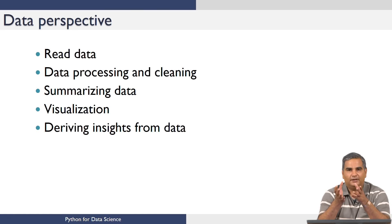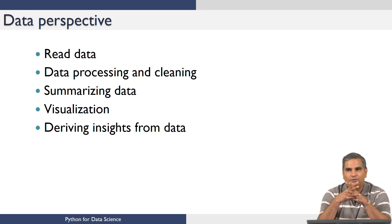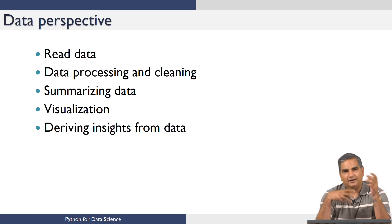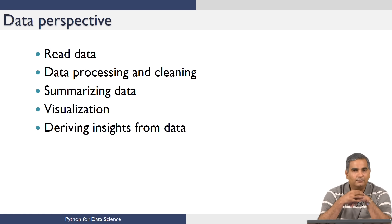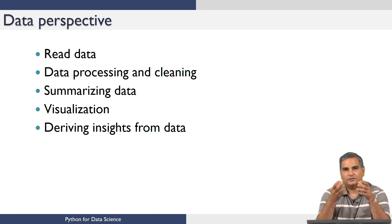At this point you have been able to get the data into the system, process and clean it, and arrive at a data structure that is reasonably complete. Then you will try to summarize this data. Usually, summarization involves very simple statistical measures — you could compute a median, mode, or mean of a particular column, or compute variance. We are going to teach you how to use these notions of statistical quantities to summarize the data.